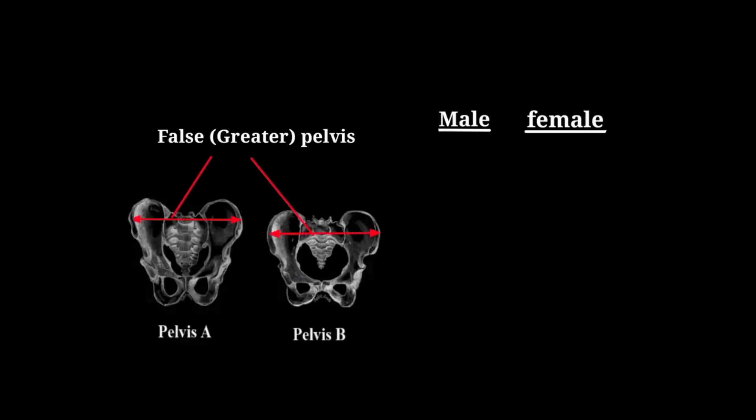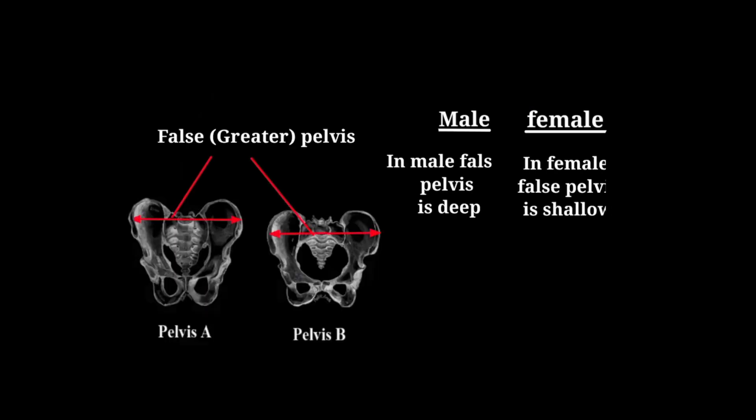The first point is the false pelvis. The false pelvis is deep in the male pelvis, whereas in the female pelvis the false pelvis is shallow.